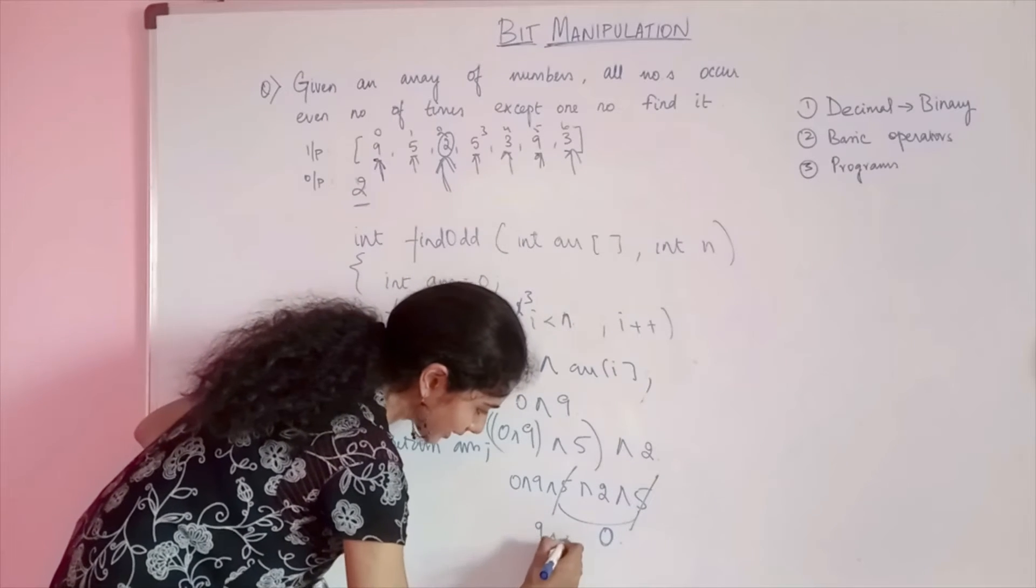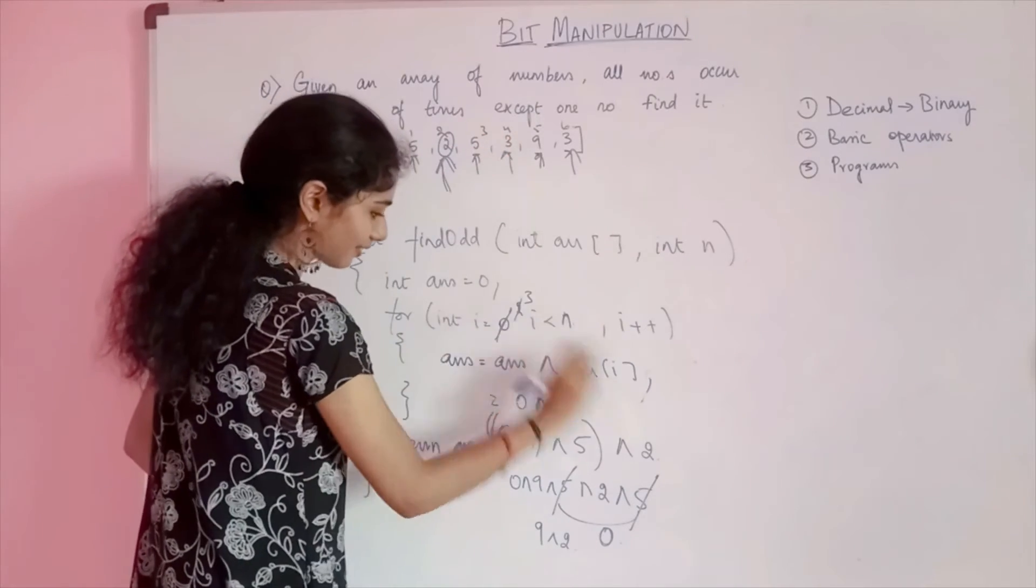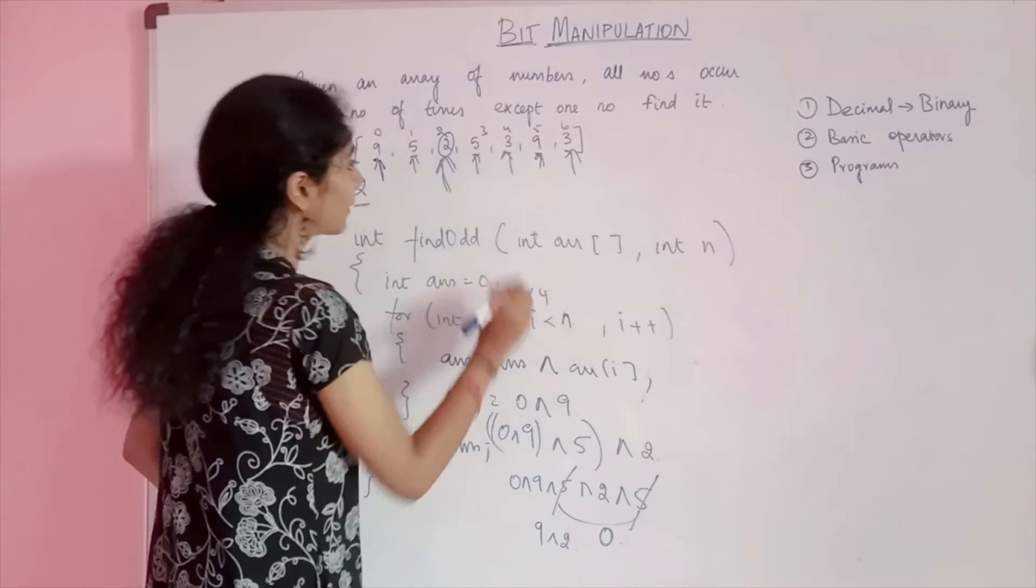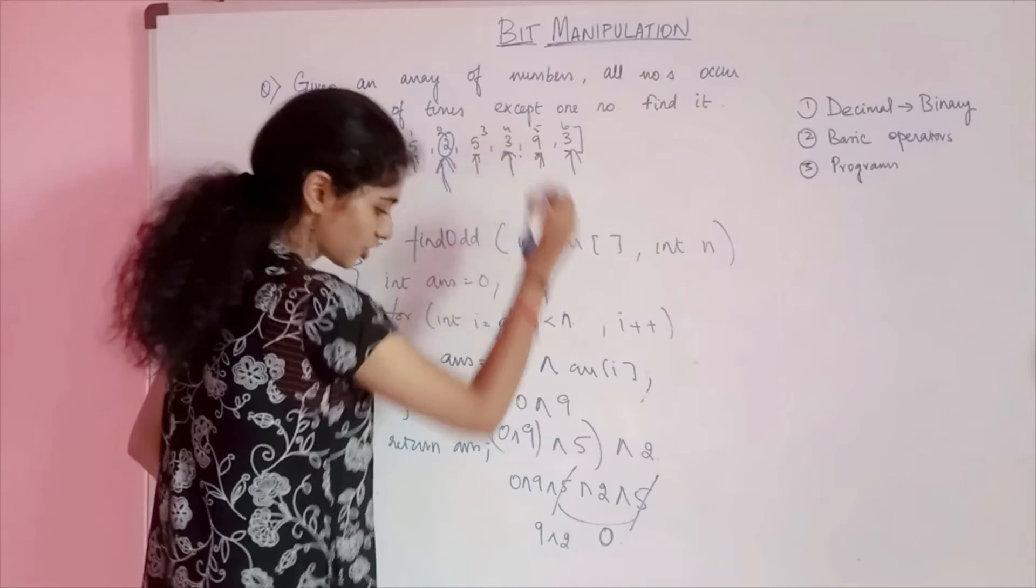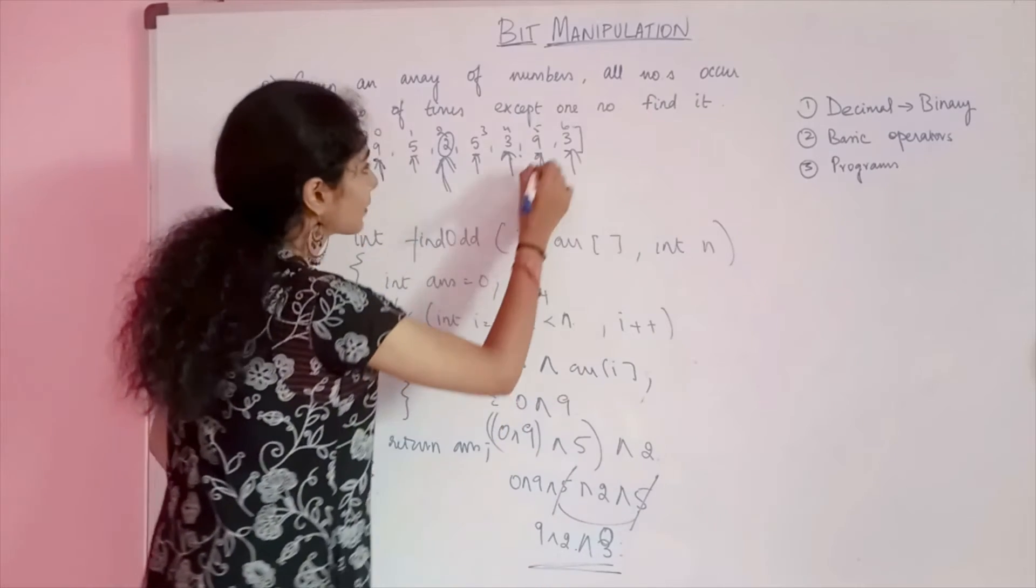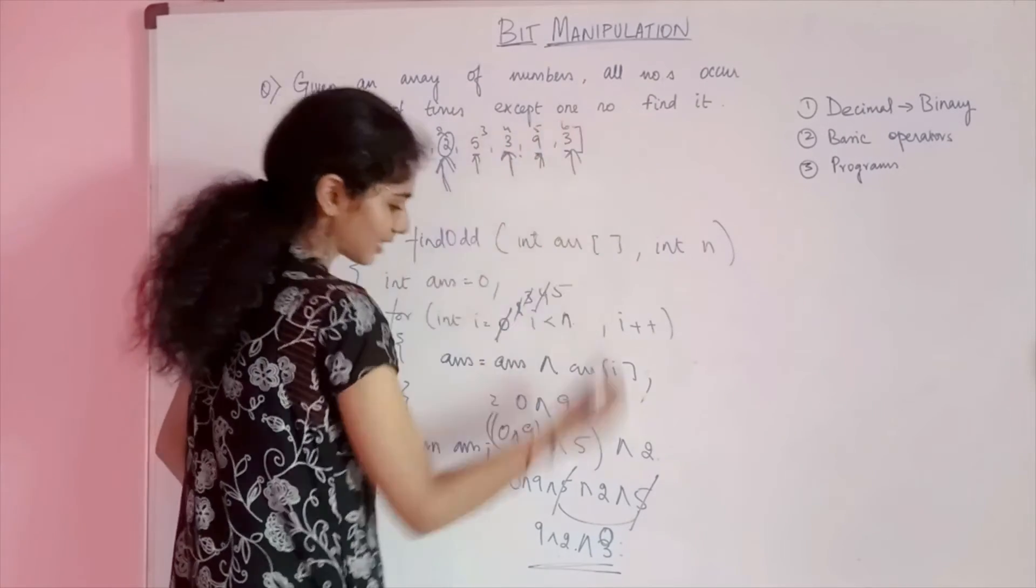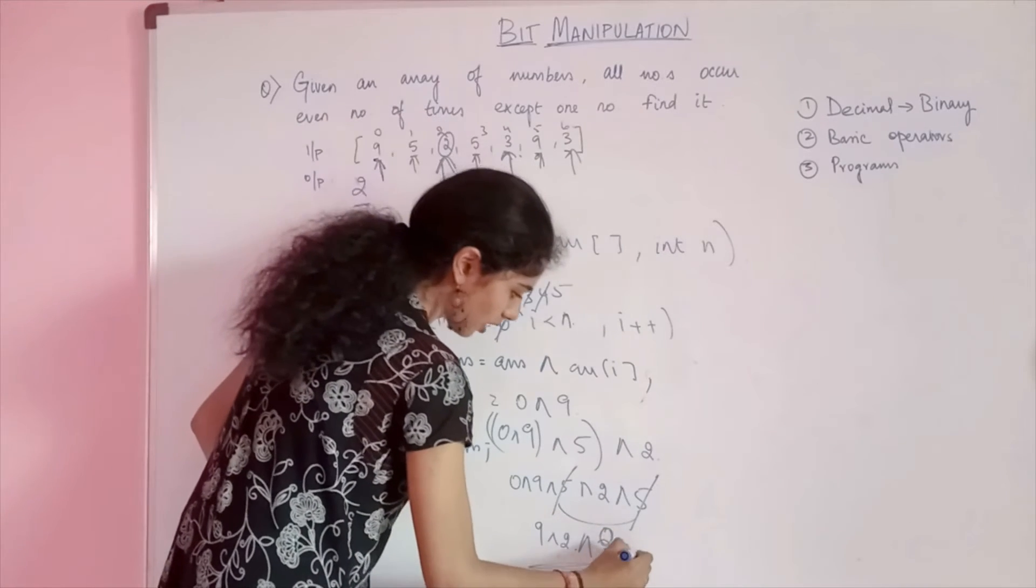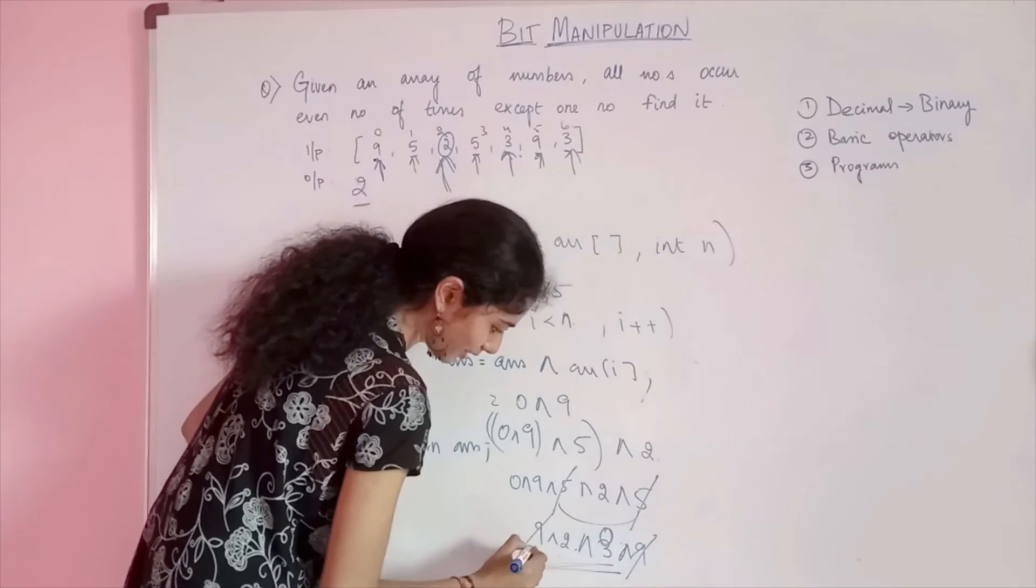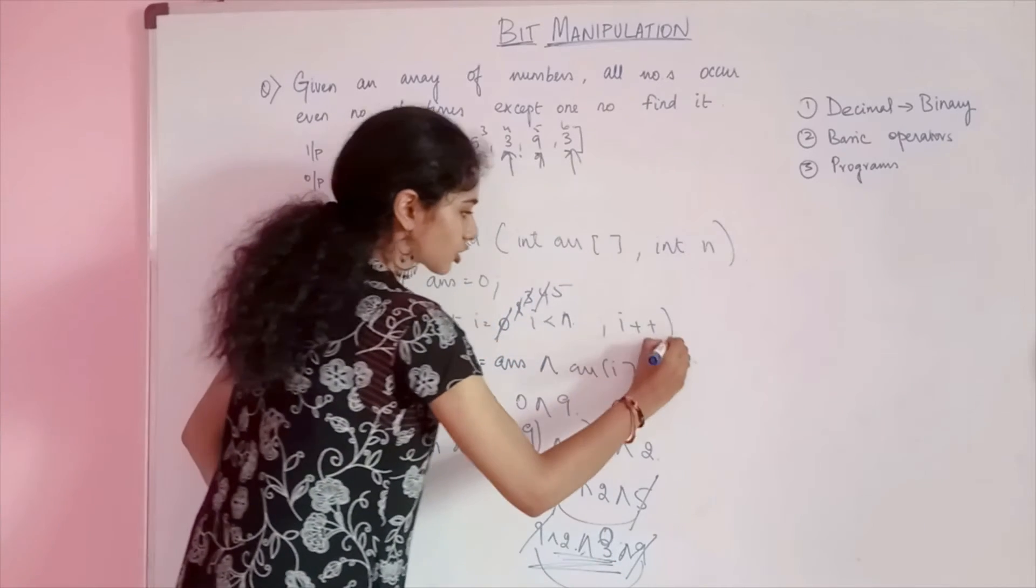At array of 4, the iteration continues. i will become 4. At 4, we reach 3, XORed with 3. This 9 XORed with 2 XORed with 3. Again, iteration continues. i will be 5. When i is 5, 9 XORed with 2 XORed with 3 XORed with 9. 9 will get cancelled, XOR will amount to 0. So you have 2 XORed with 3.